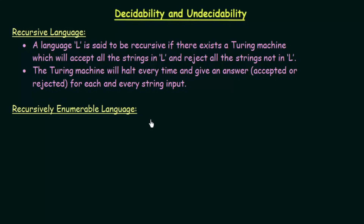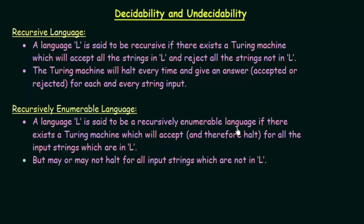Now let us see what recursively enumerable languages are. A language L is said to be recursively enumerable if there exists a Turing machine which will accept and therefore halt for all input strings which are in L, but it may or may not halt for inputs which are not in L. So if you pass a string not in the language, the Turing machine may or may not halt — we cannot guarantee that.